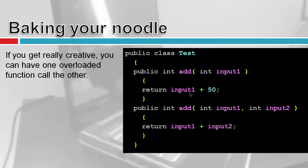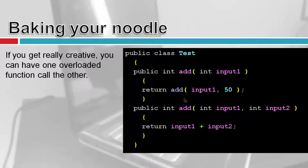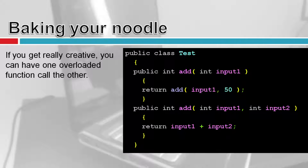If you notice, these functions are really similar. If you wanted to get creative, you could have one function call the other. For 'add(input)' with one parameter, instead of returning 'input + 50' directly, I can call the two-parameter version, passing 'input' as the first argument and 50 as the second. It's a bit mind-bending and you don't have to do it this way, but if you want to do advanced stuff, you can have one overloaded function call the other overloaded function.